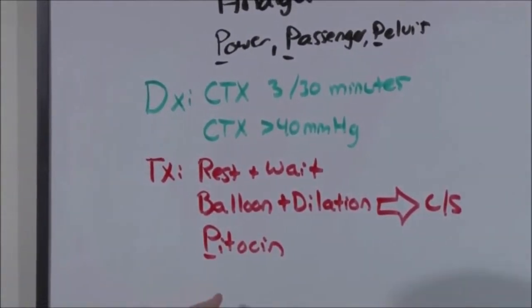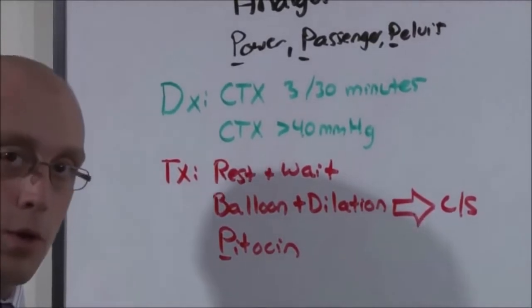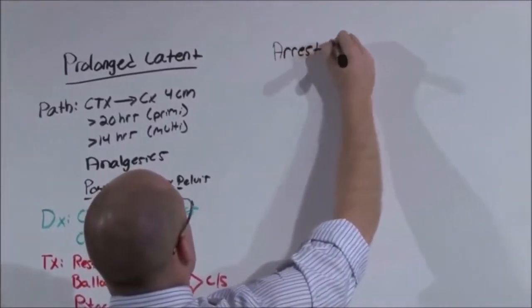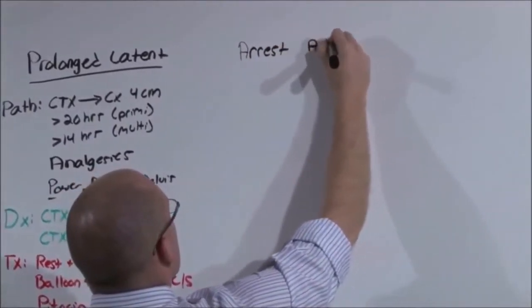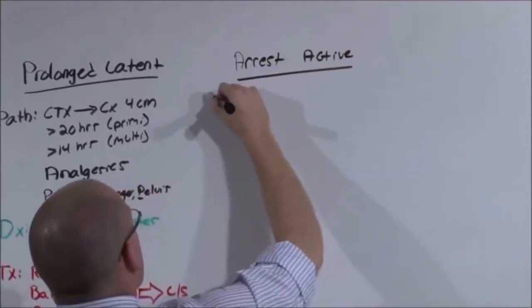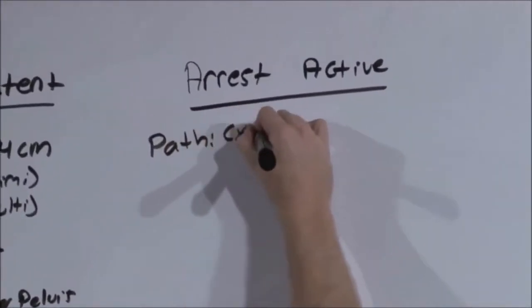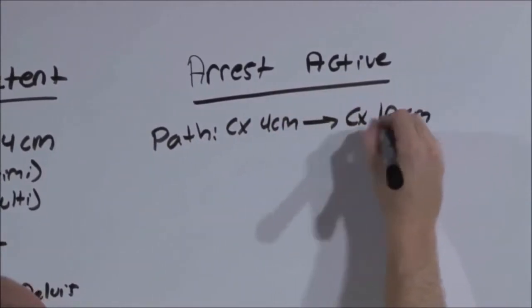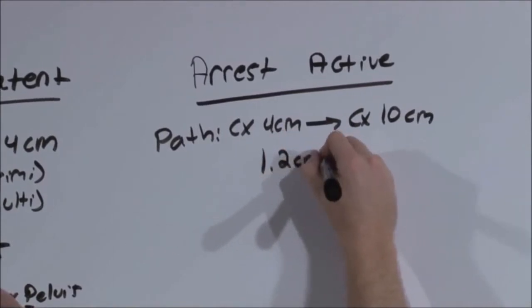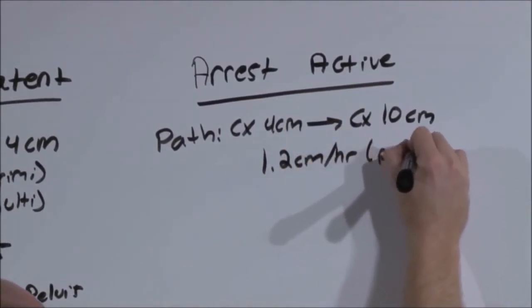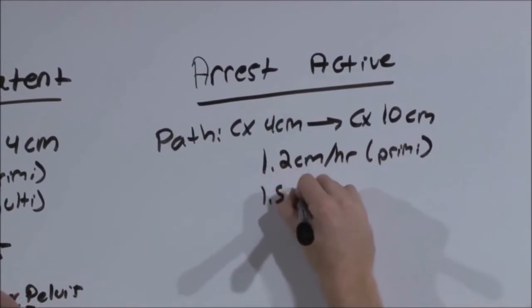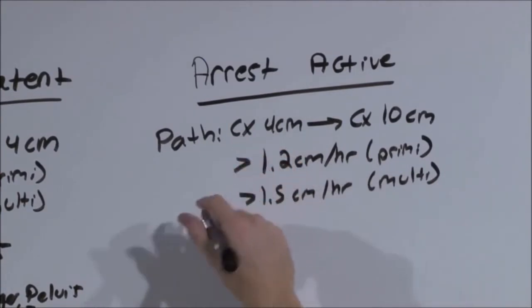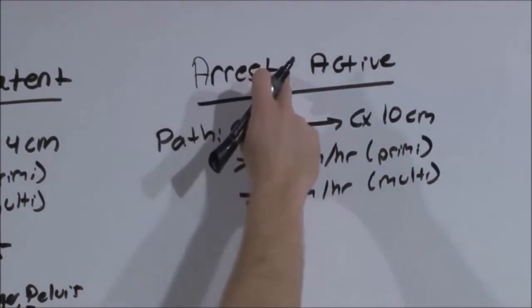That is for prolonged latent phase. Let's now talk about prolonged or arrested active phase. Active phase begins at cervical dilation of 4 centimeters and continues until maximal dilation of 10 centimeters. It normally occurs at a rate of 1.2 centimeters per hour for a primiparous and 1.5 centimeters per hour for a multiparous. If it takes longer than that, she's either in a prolonged or arrested active phase.